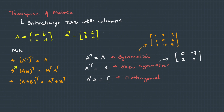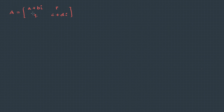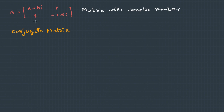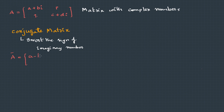For a matrix with complex numbers, we can form the conjugate matrix by inverting the sign of the imaginary part. So for matrix A, the conjugate A* has a−bi where the original had a+bi. Real numbers remain unchanged — p stays p, q stays q — and c+di becomes c−di.